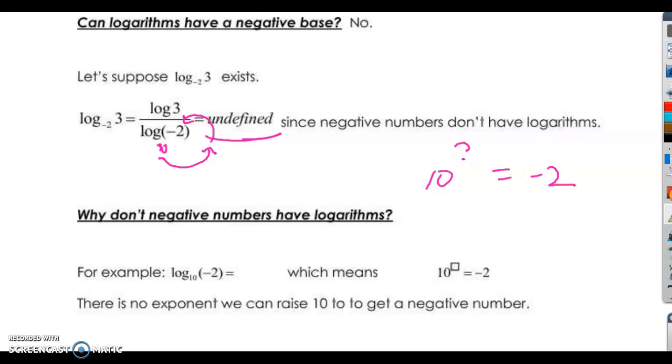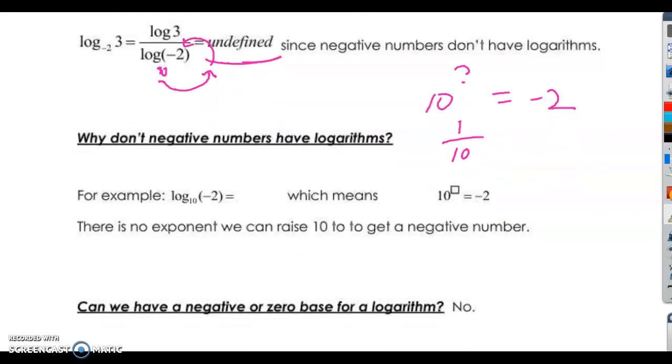If I put a positive value in there, I'm going to get a positive answer. If I put a negative value in there, I'm going to end up getting a fraction. But it's still like 10 to the negative 1 is 1 over 10. It's still positive. So that answers that question.